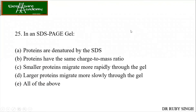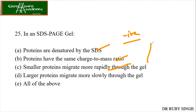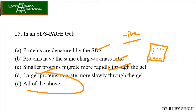In SDS-PAGE gel, proteins are denatured by SDS — correct. Proteins have the same charge-to-mass ratio — yes, true, because SDS imparts a negative charge to all proteins. Smaller proteins migrate more rapidly through the gel — yes, that's why at the bottom of the gel you see the smaller proteins. Larger proteins migrate more slowly through the gel — yes, because of their size, they are seen on the top. So all options are correct — 'all of the above' is the correct answer.